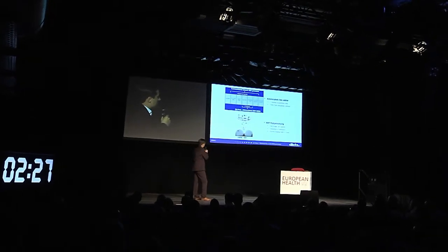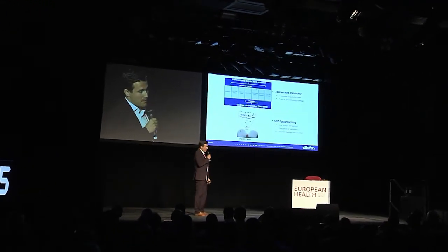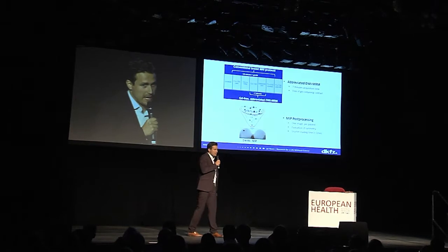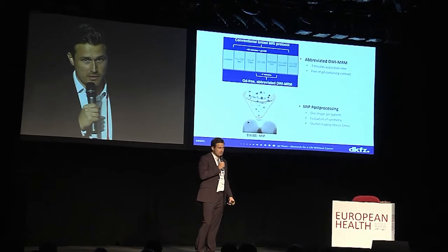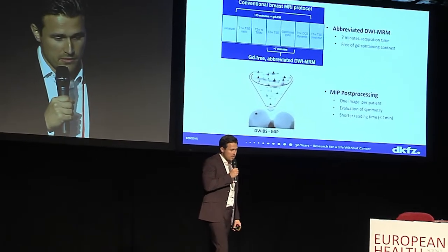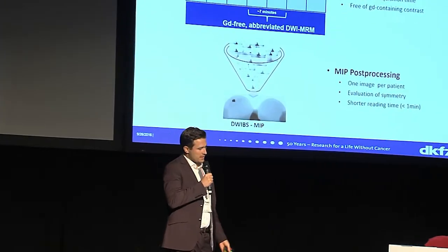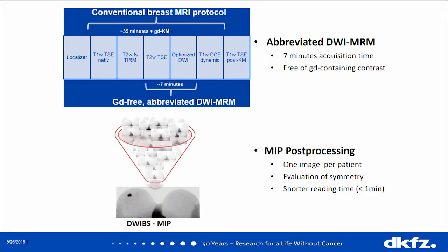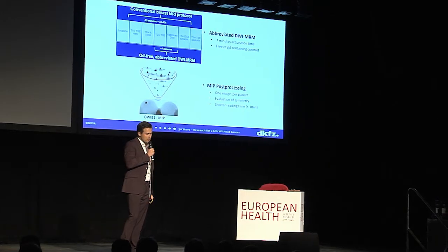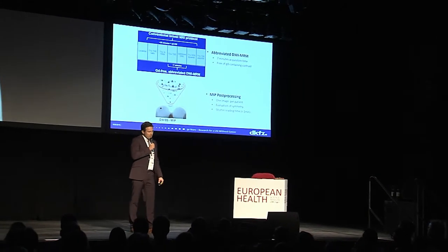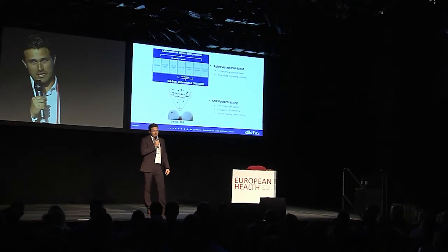We have developed a short and abbreviated MR protocol. Using MRI in breast cancer diagnostics is already not standard. We wanted to use a breast cancer protocol without the use of contrast agent, which is only seven minutes short, as you see below. The basic sequence is a DWIPS sequence — diffusion-weighted imaging with background suppression.